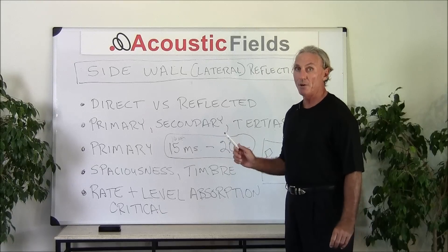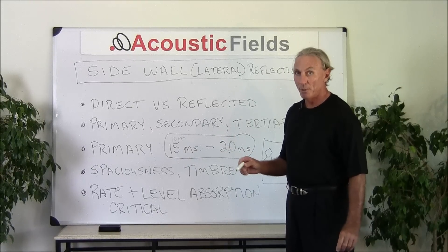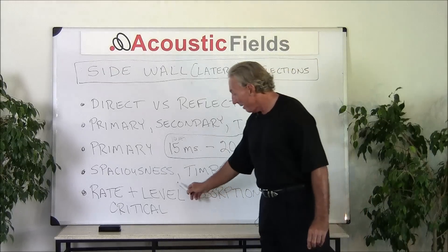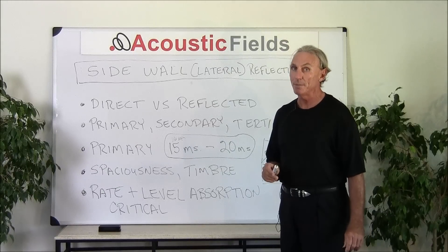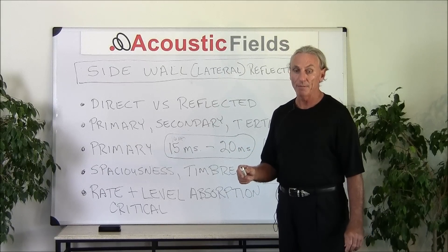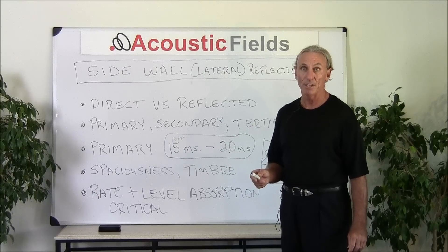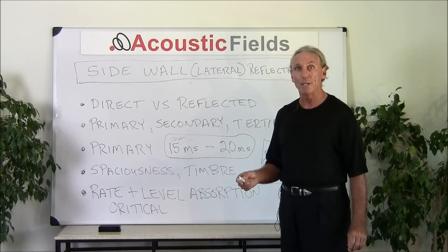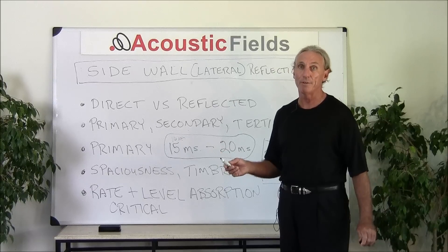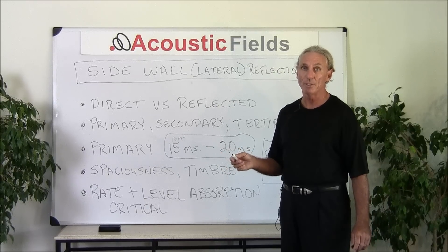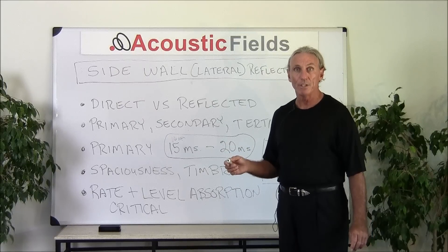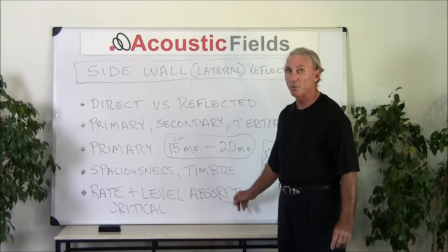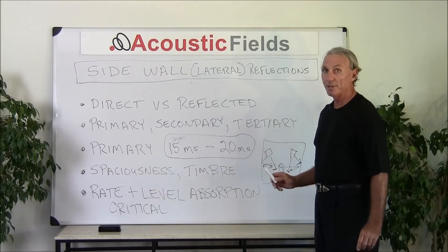We have to be very cautious about what kind of room treatment we use on those reflections. Absorption is a standard treatment; diffusion can also be used. If we use absorption, we have to be very concerned with the rate and level of absorption. We don't necessarily need 100% of everything — in fact, it's not at all about 100% of anything — because we don't want to destroy our energy in order to manage it. Once energy is absorbed and converted to heat, it's gone forever. So we want to be very careful about the rate and level of absorption for our primary, secondary, and tertiary reflections.